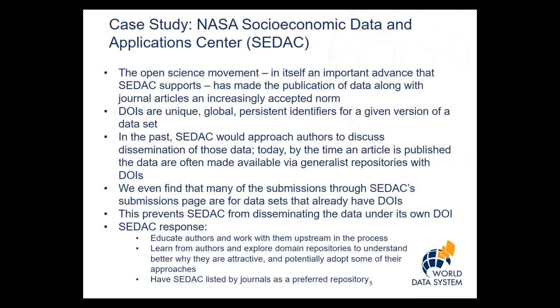Once the data have a DOI, we are unable to disseminate the data. This is happening in part because the authors want to get their data out through a generalist repository in order to go through peer review, but they don't really understand the repercussions of having a DOI associated with their dataset. Our response will be to educate authors and work with them upstream in the process, learn from authors, explore why generalist repositories are very attractive in some cases, and maybe adopt some of their approaches — then have CDAC listed by journals as a preferred repository for certain domain areas.